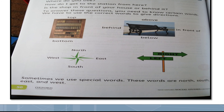Sometimes we use these special words — North, South, East, and West. In today's lesson we have studied about directions. The words that tell us directions are: top, bottom, above, below, behind, in front of, left and right. And the cardinal directions are North, South, East, and West.